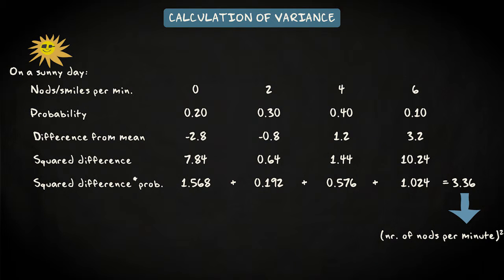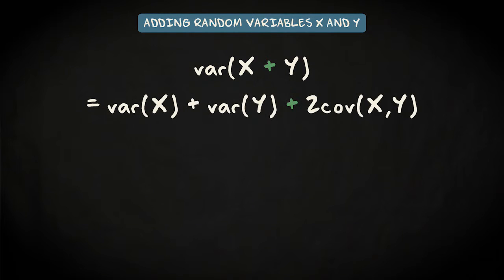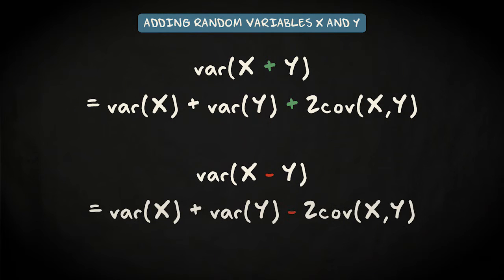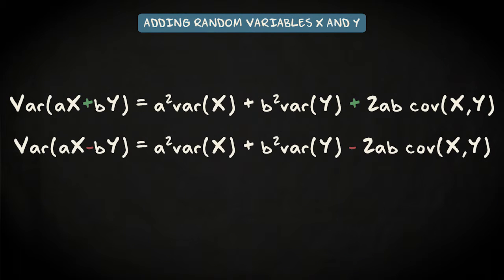Let's now consider what happens with the variance when two random variables are added or subtracted. For random variables X and Y, the variance of their sum is the sum of their separate variances plus 2 times the covariance between X and Y. And the variance of their difference is an even more curious equation, as the sum of their variances minus the covariance between X and Y.